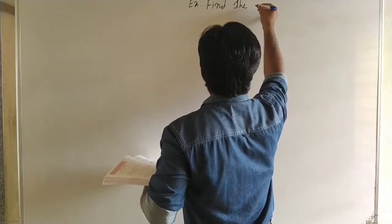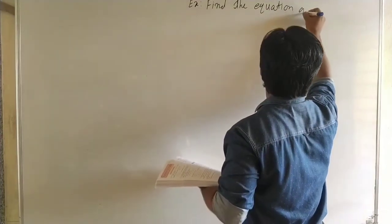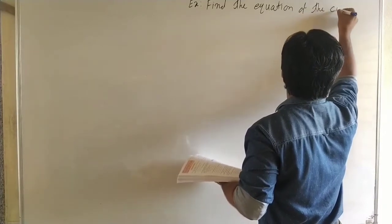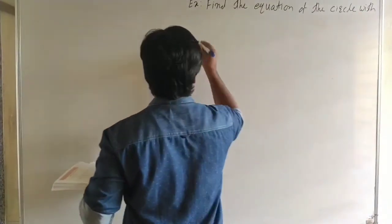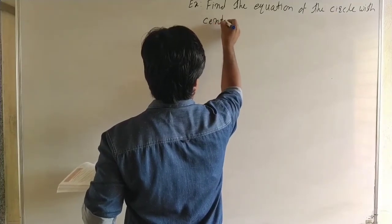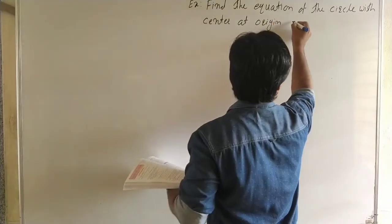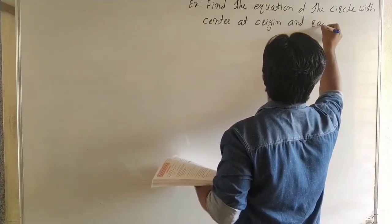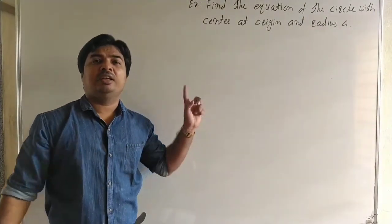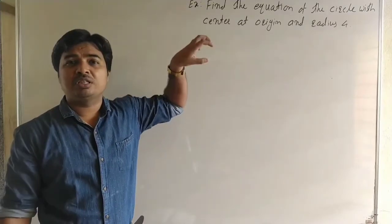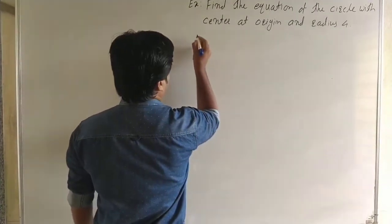Find the equation of circle with center at origin and radius. Here, to find the equation of circle we know only the center and radius. Center at origin means it is a standard circle, and we know that the equation of a standard circle is x² + y² = r².